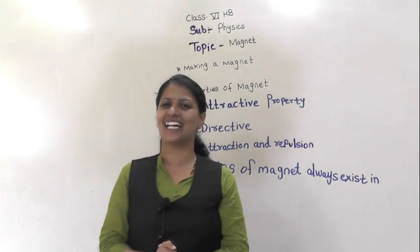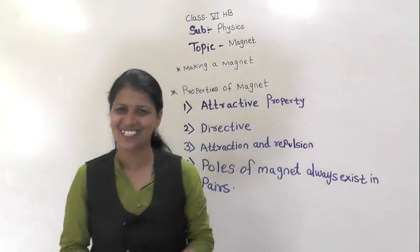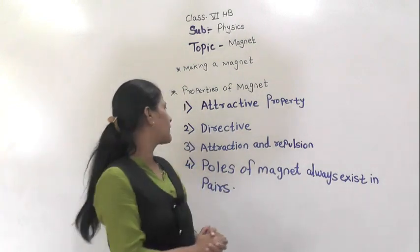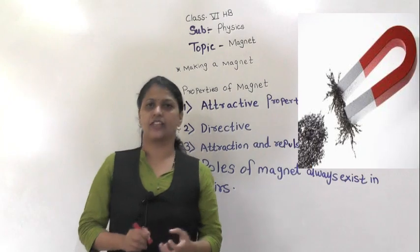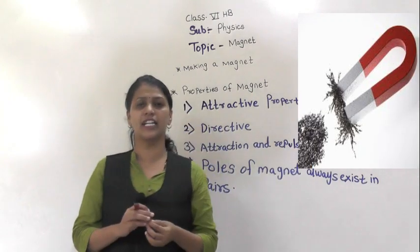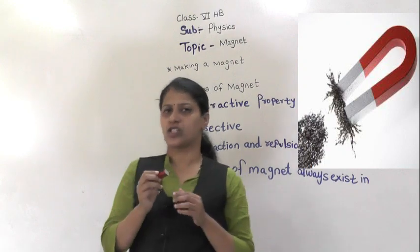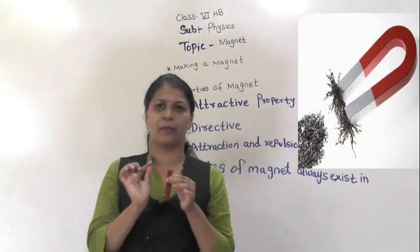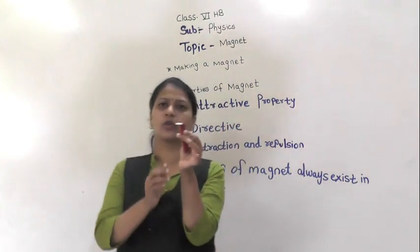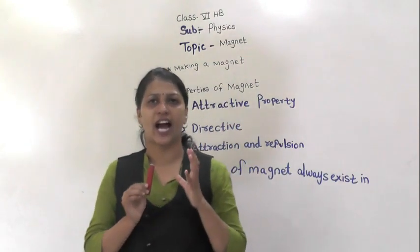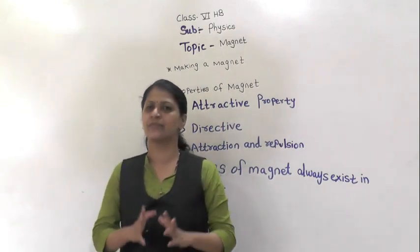Let's start the next point: properties of a magnet. The first is the attractive property. The magnet attracts certain materials — the material towards which the magnet gets attracted. This iron strip, once rubbed, gets easily attracted. That property is called the attractive property.